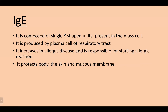IgE is composed of single Y-shaped units present in the mast cells. It is produced by plasma cells of the respiratory tract. It increases in allergic reactions or diseases and is responsible for starting allergic reactions. It protects the body, the skin, and the mucous membranes.